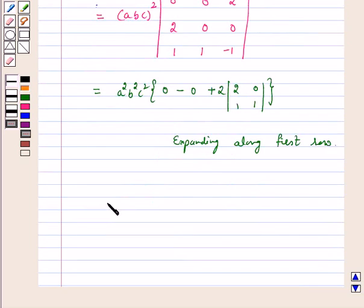Which is equal to a square b square c square into 2 into 2, which is equal to 4 a square b square c square, which is equal to right hand side.